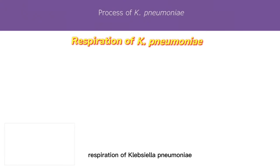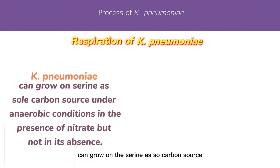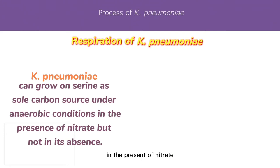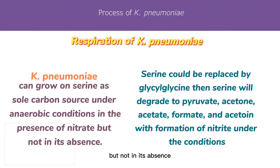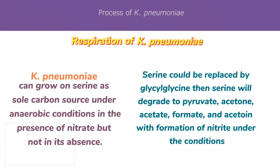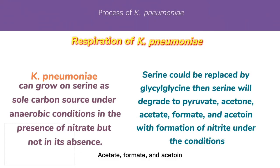Regarding the respiration of Klebsiella pneumoniae: it can grow on serine as a sole carbon source under anaerobic conditions in the presence of nitrate, but not in its absence. Serine could be replaced by glycyl-glycine, and serine will degrade to pyruvate, acetone, acetate, formate, and acetone, with formation of nitrite under these conditions.